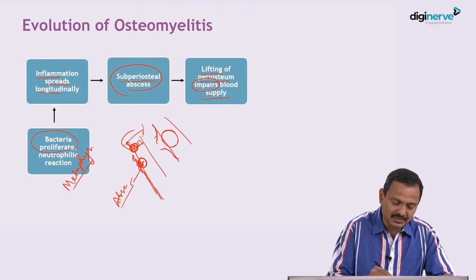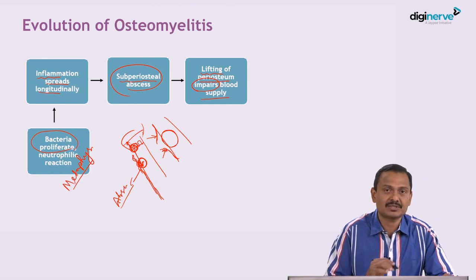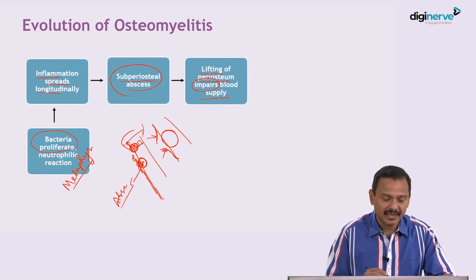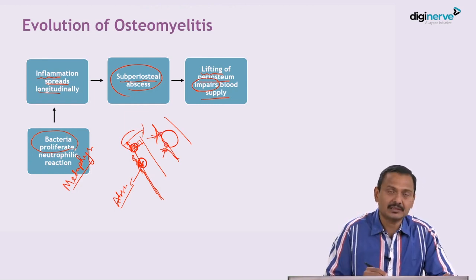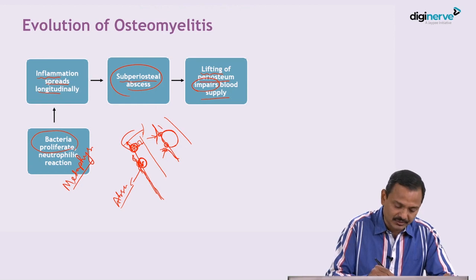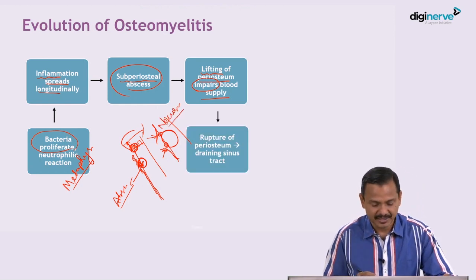Once the periosteum is lifted, the blood supply that is coming from outside will be affected. The underlying bone will undergo necrosis because of lack of blood supply.